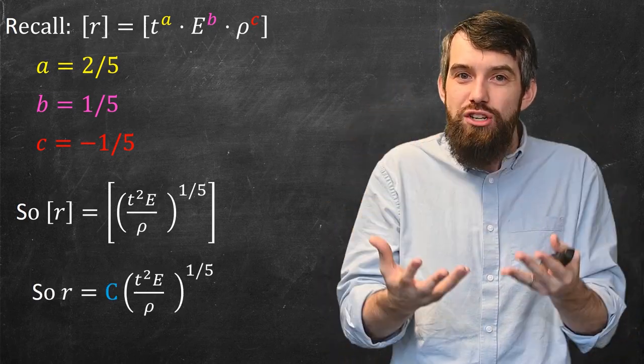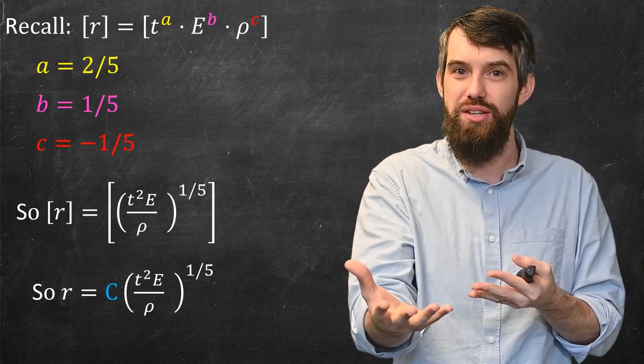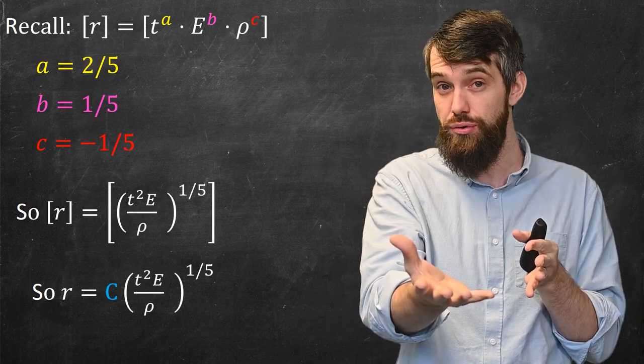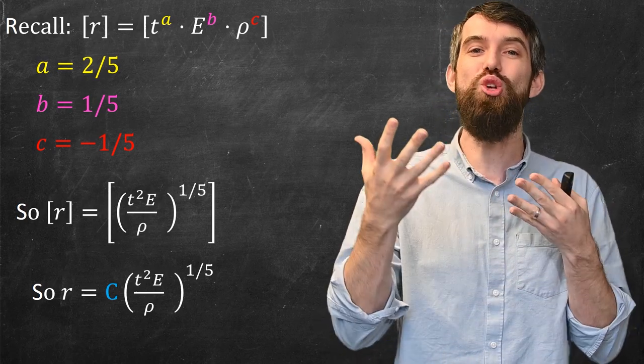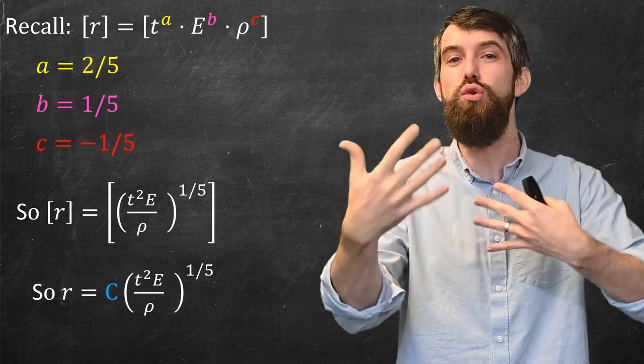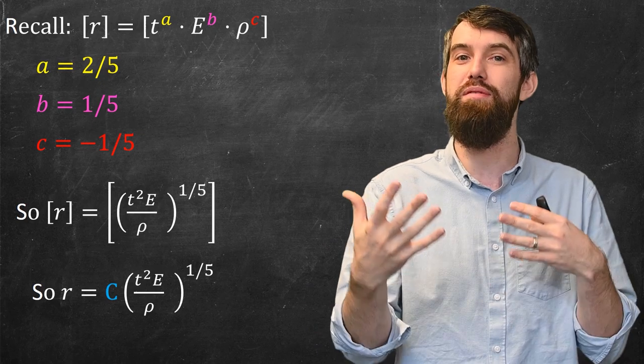Indeed, if I want to think about the actual r, so not just the dimensions, but where I care about its magnitude, it's some constant, one that I admittedly do not know, some constant, and then multiplied by this expression, this t squared, e over the density, to the 1 fifth, and that gives me a really nice prediction for the shape of this graph.